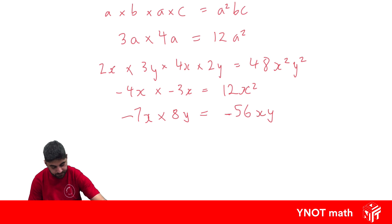One more. 6x times minus 7a. Positive number times a negative number. From our integer rules, gives us a negative number. 6 times 7 is 42. And x times a. Well they're not the same, so we're just going to write them next to each other but in alphabetical order. So ax.